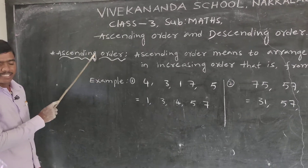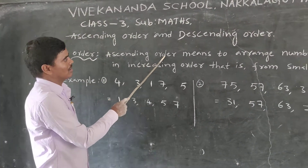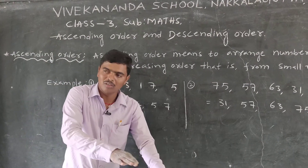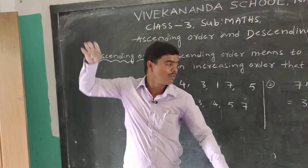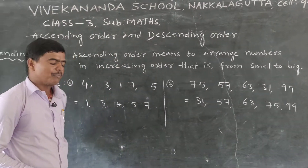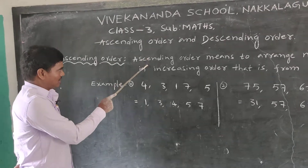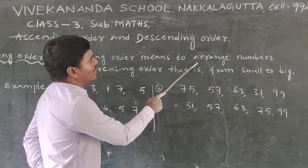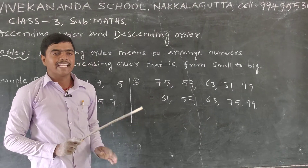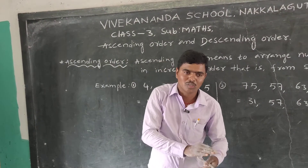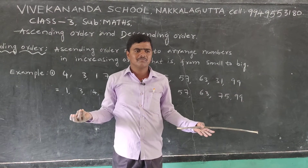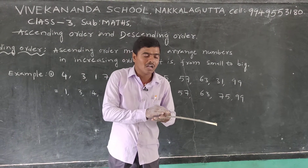What is ascending order? Ascending order means to arrange numbers in increasing order, that is from small to big. Small to big — that is very easy. Ascending order means the numbers are arranged from small to big.